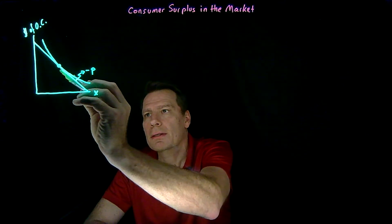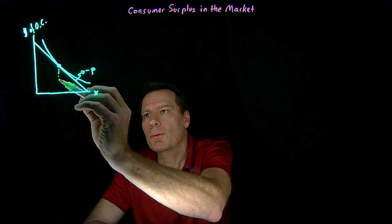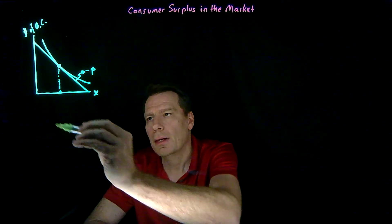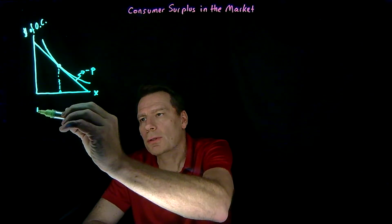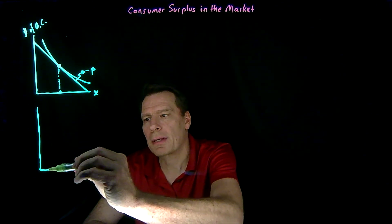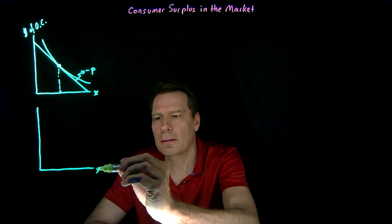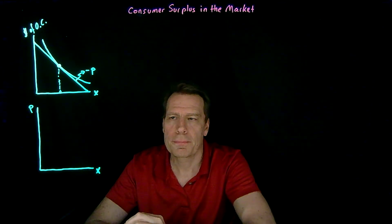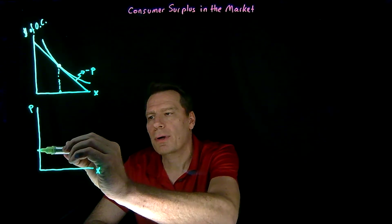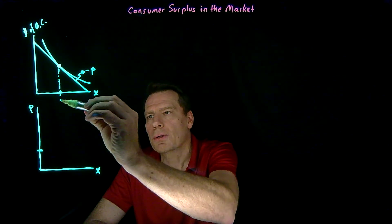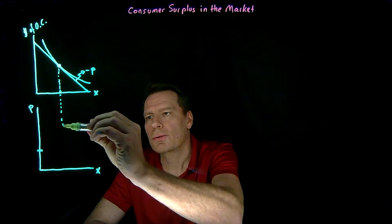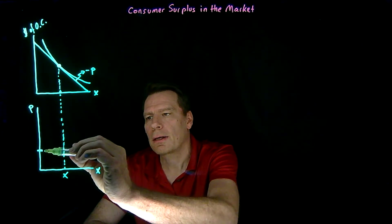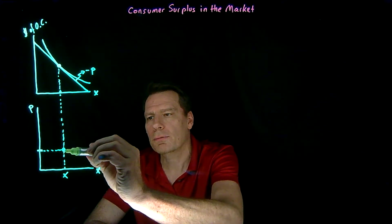At this price, the consumer will demand this quantity of good x. In our lower picture, we kept x on the horizontal axis and put price on the vertical axis. At that initial price, we saw that the consumer demands this quantity of x, and we got a point on the demand curve.